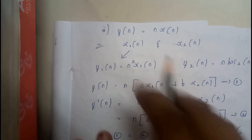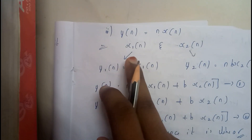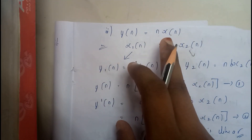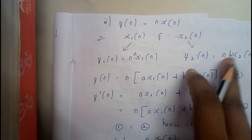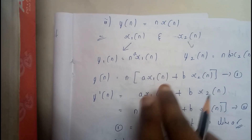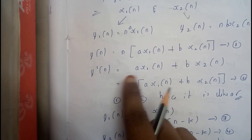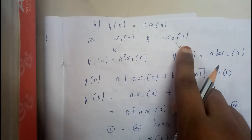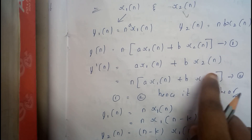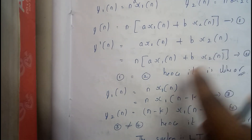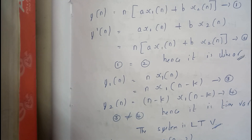Now let us go through the second example: Y(n) = n · X(n). We assume two signals Y1(n) and Y2(n). When we pass X1(n) through the system, we get n·A·X1(n). When we pass X2(n), we get Y2(n) = n·B·X2(n). Adding them, we can take n common: n·(A·X1(n) + B·X2(n)). In the second case, we multiply A and B first, add them as A·X1(n) + B·X2(n), then pass through the system, giving n·(A·X1(n) + B·X2(n)). Since result one equals result two, this is a linear system.